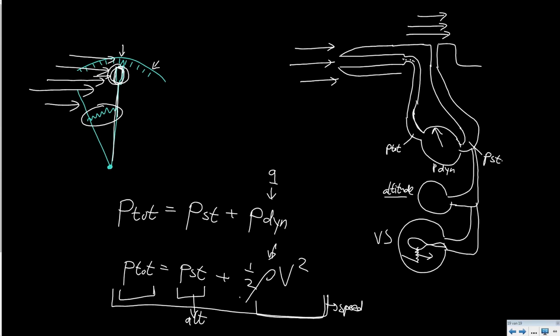But I said this half rho v squared is not just the air speed, but it also contains this air density. Well the trick of the speed measurement is that we basically ignore this. We assume always that the density is equal to the density at sea level, which is 1.225 kg per meter cubed.